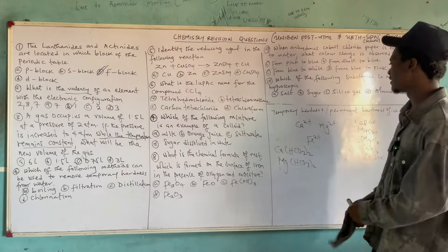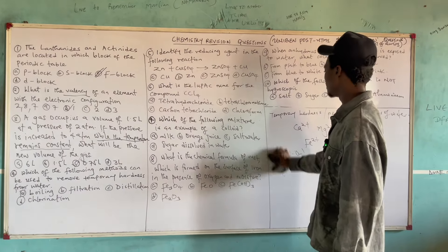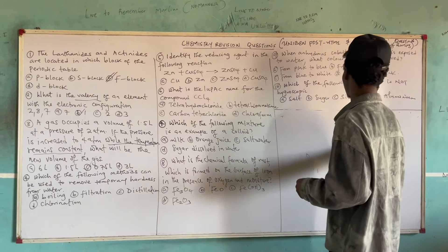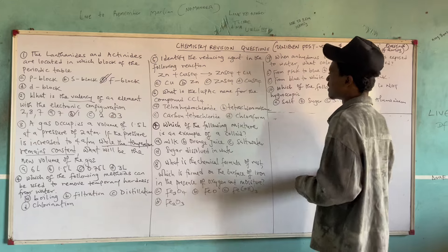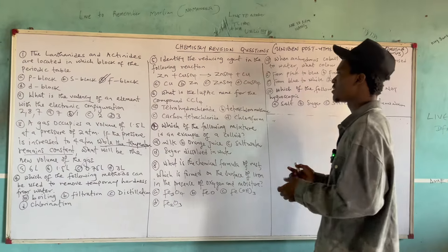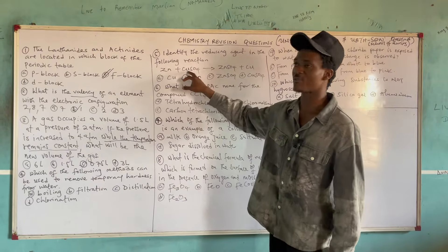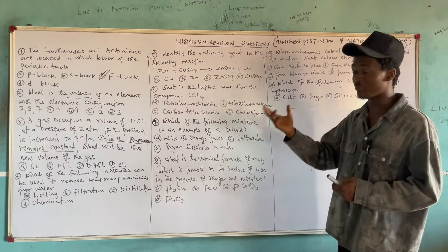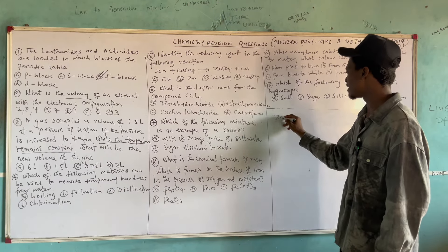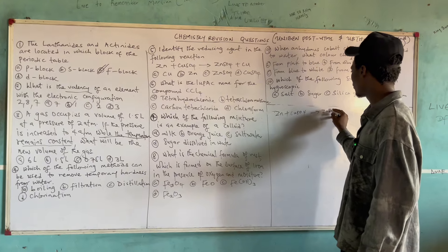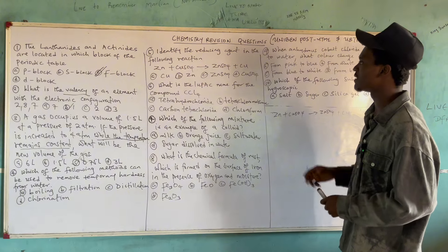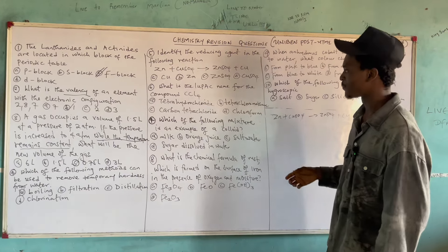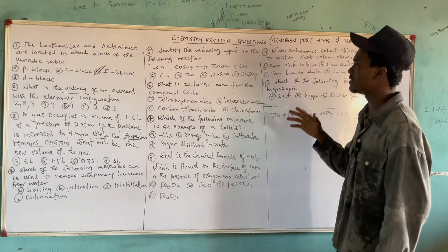Question 5: Identify the reducing agent in the reaction: Zn + CuSO₄ → ZnSO₄ + Cu. This is a displacement reaction where zinc removed copper from the solution. To identify the reducing agent, recall that any substance oxidized at the end of a redox reaction is the reducing agent, and any substance reduced is the oxidizing agent. The oxidation state of zinc goes from 0 on the left to +2 on the right.